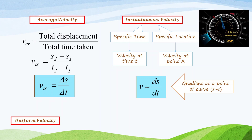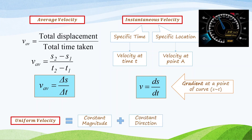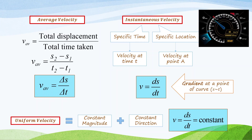We can get instantaneous velocity from the gradient at a certain point of a displacement-time graph. The difference between average velocity and instantaneous velocity is: average velocity has a certain period of time, but instantaneous velocity is the velocity at certain time only. Uniform velocity is velocity which has constant magnitude and constant direction. The formula is ds/dt equal to constant. So, when a car travels at uniform velocity, it does not accelerate or change direction — acceleration equals zero.